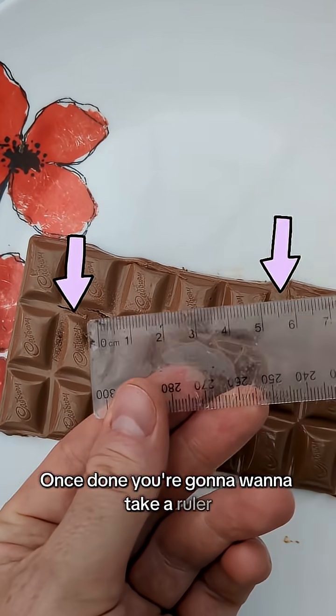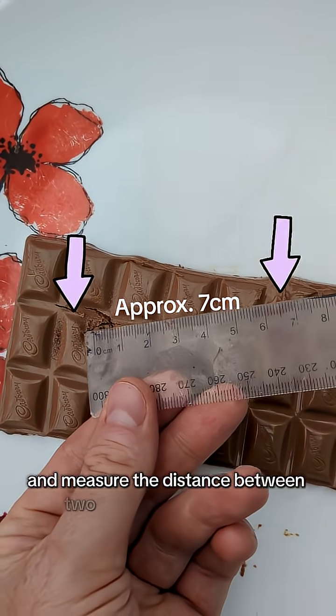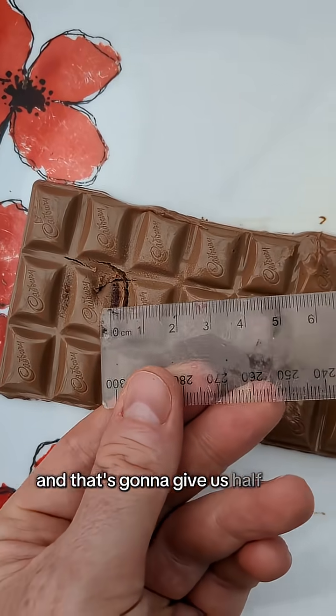Once done, you're going to want to take a ruler and measure the distance between two of those melted spots. And that's going to give us half of a wavelength.